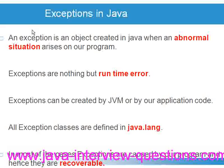If we try to access a method on a null object, JVM will throw a NullPointerException. Next, exceptions are nothing but a runtime error. Exceptions are runtime errors because they do not show any problem at compile time — at runtime they throw an error.